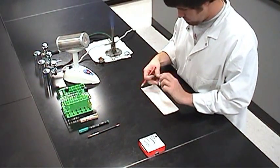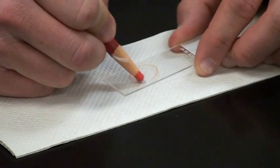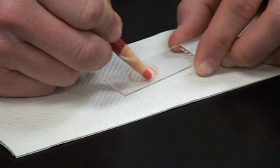Using the china marker, make a target circle about the size of a dime on the underside of the slide, about two-thirds down away from the frosted end.